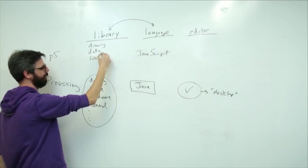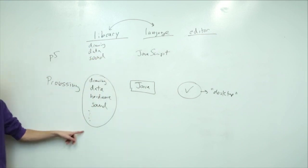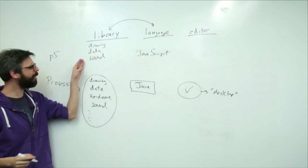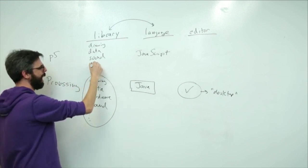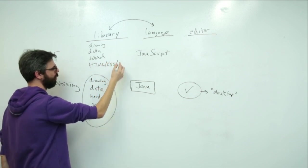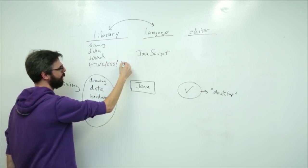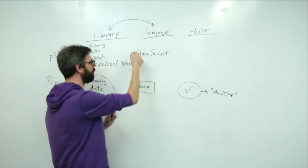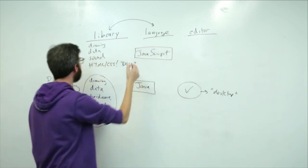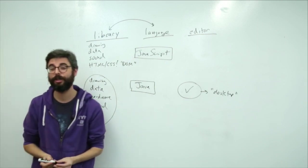There is an editor for Processing which I'll say is like a desktop editor. So Processing has a desktop editor that you can download and use. p5 is, the language that p5 is written in and that it is a library for is JavaScript and it has libraries also for drawing and data and sound.